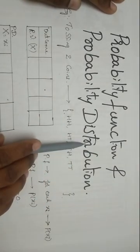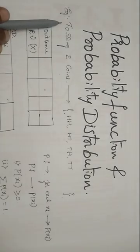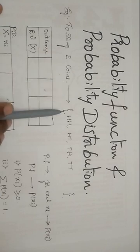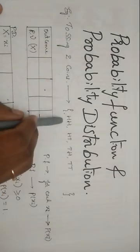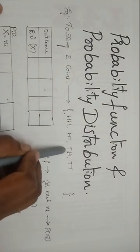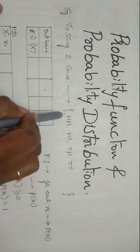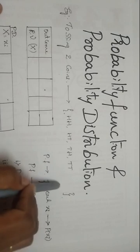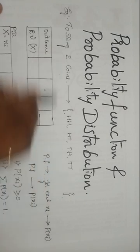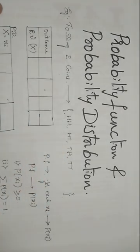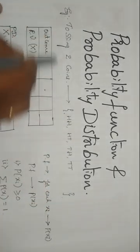To explain these two concepts, let us take the example of tossing two coins. When we toss two coins, the sample space we get will be equal to HH, HT, TH, and TT. So these four samples we will get — all the outcomes when we toss two coins are these four samples. This is the sample space of our problem.